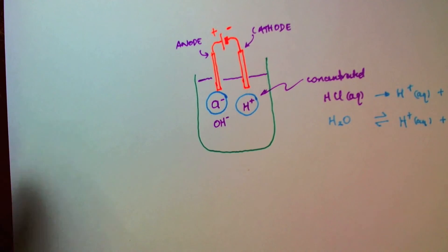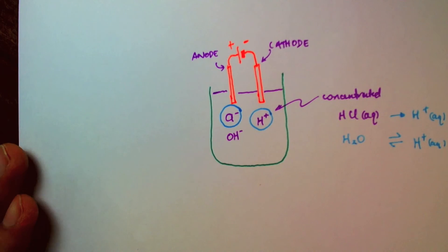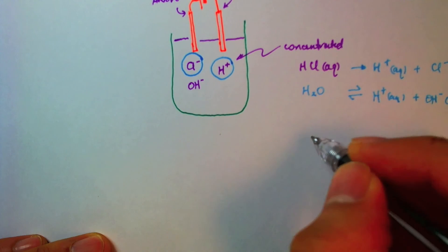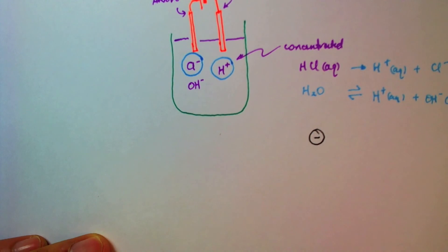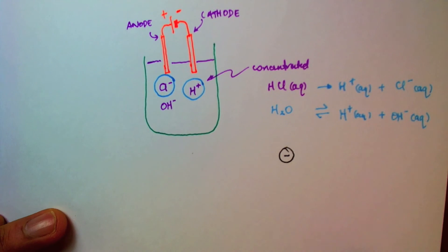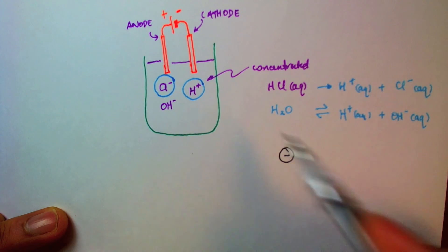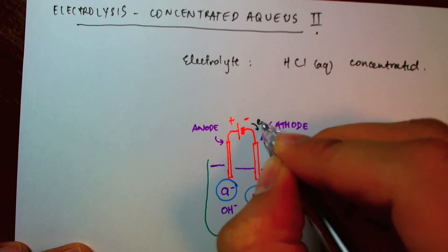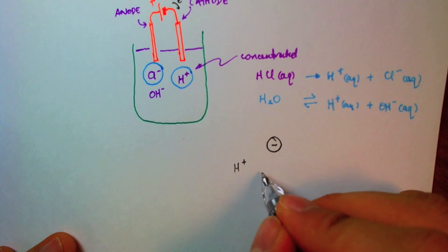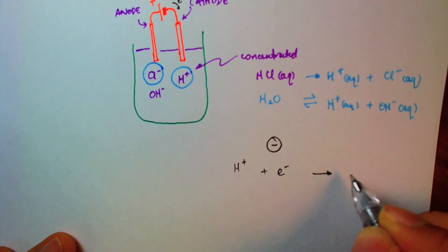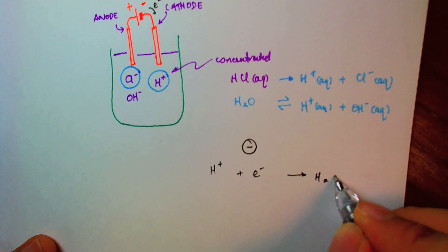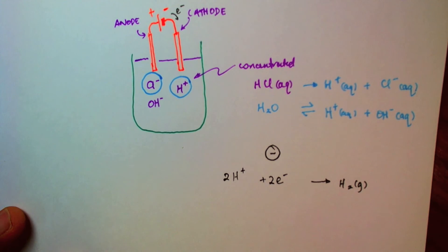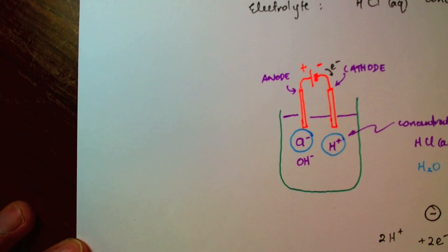And so the next thing I will do is write half equations for both the cathode and the anode. So at the cathode. I see that the hydrogen ions are discharged. So the cell supplies electrons. Hydrogen will receive these electrons to form hydrogen gas, which is diatomic. So I need two hydrogen ions and two electrons to give me the diatomic hydrogen gas.